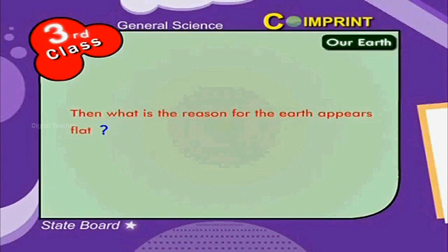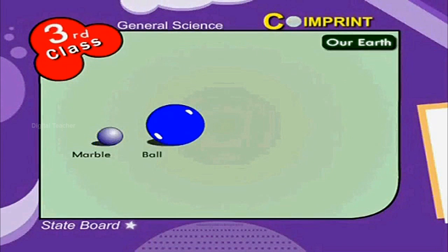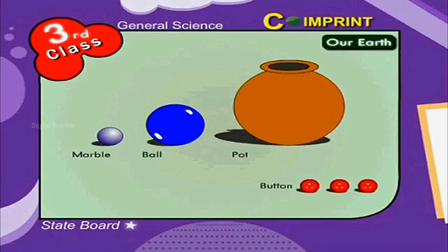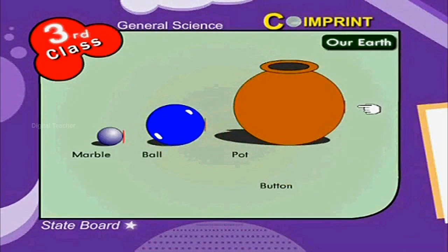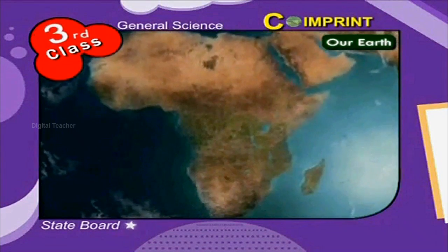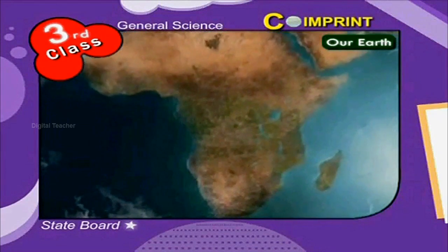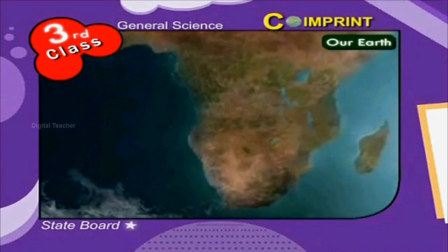Then, what is the reason the Earth appears flat? Here is an example. Take a marble, a ball and a pot. Take three flat buttons of the same size and place them each on the three things. What did you find? The button which is on the pot lay completely flat. In the same way, our Earth is a very big sphere. What we see on its surface is very small, so the Earth appears flat.